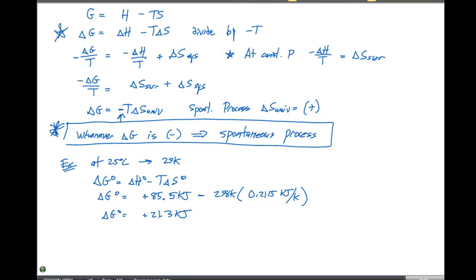So what we can say from this particular value is that this is non-spontaneous at 25 degrees Celsius, and the reason for that is that delta G naught is a positive value.